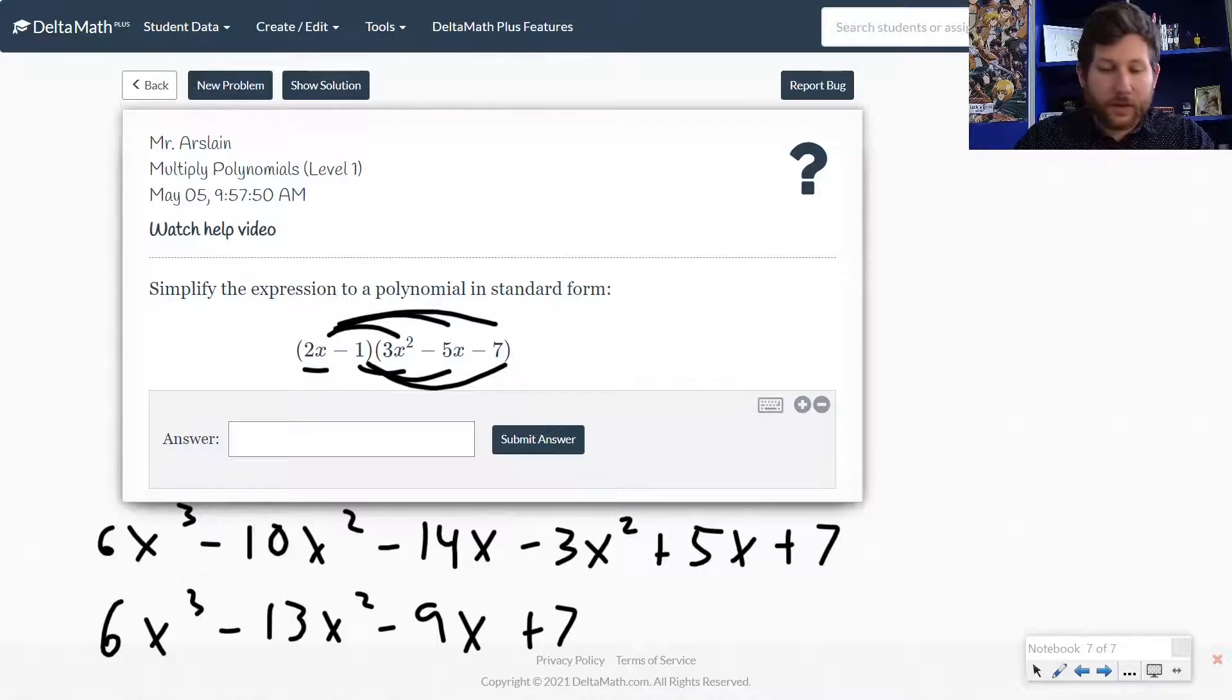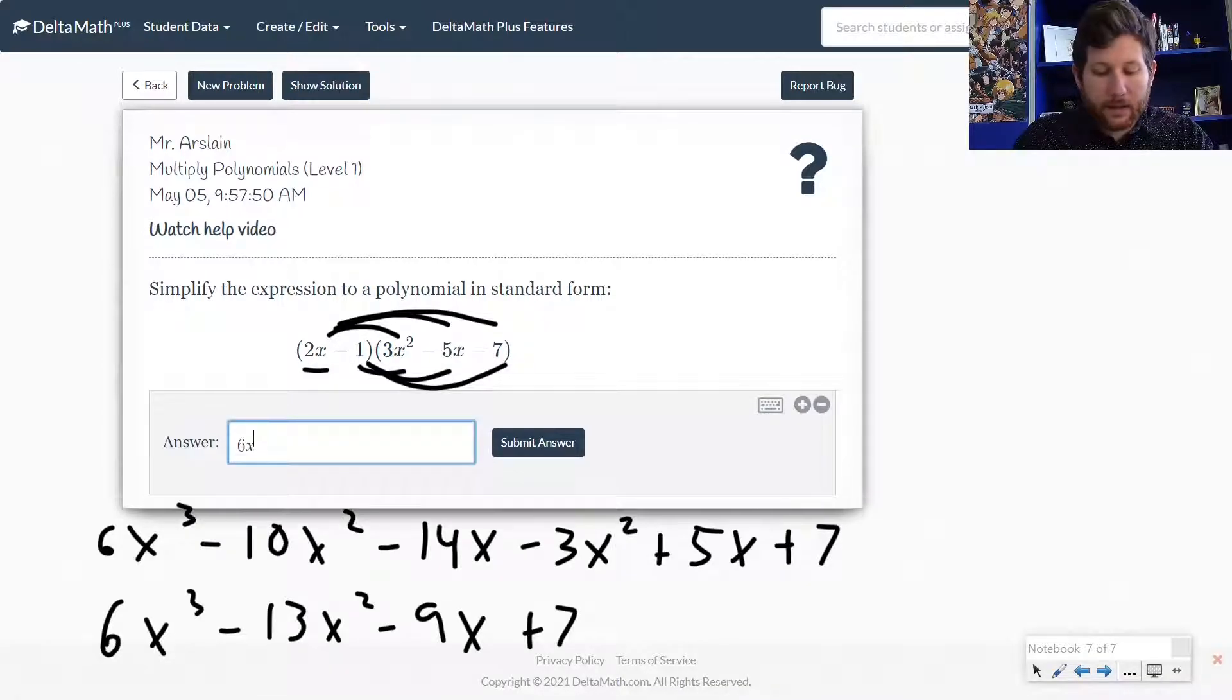All right, and that's all there is to it. Let's go ahead and put that in. So I'm going to do 6x cubed. So I do shift 6 gets you the exponent minus 13x squared. But if you wanted to,